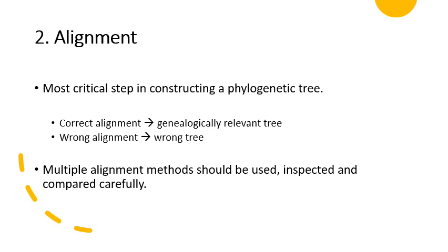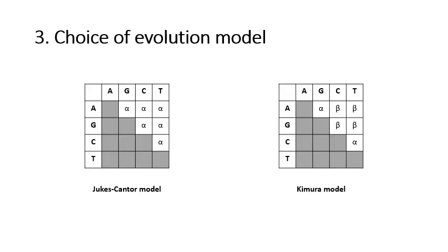Sequence alignment is the second important step and is perhaps the most critical step in constructing the phylogenetic tree. It's critical because alignment establishes correspondence in evolution — a correct alignment will give you a genealogically relevant tree, and if the alignment is wrong you will get a wrong tree. Multiple alignment methods should be used; we should not just stick to one alignment method. We will use some multiple alignment tools when we reach the lab portion of this course.